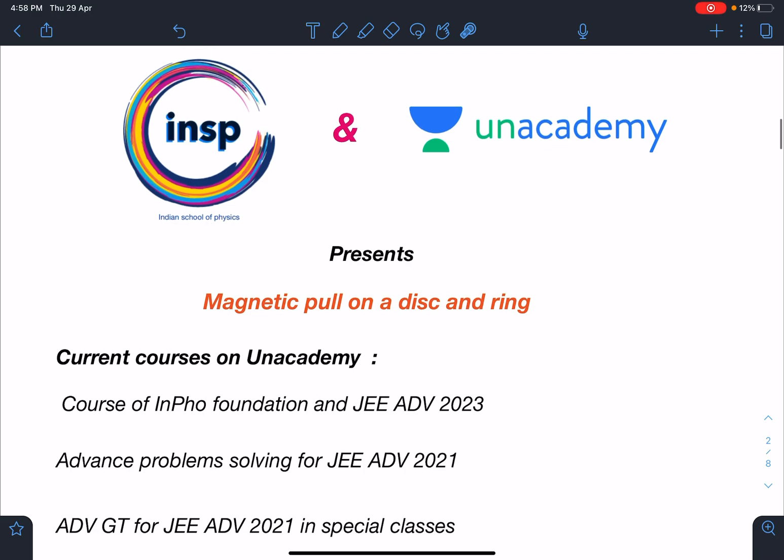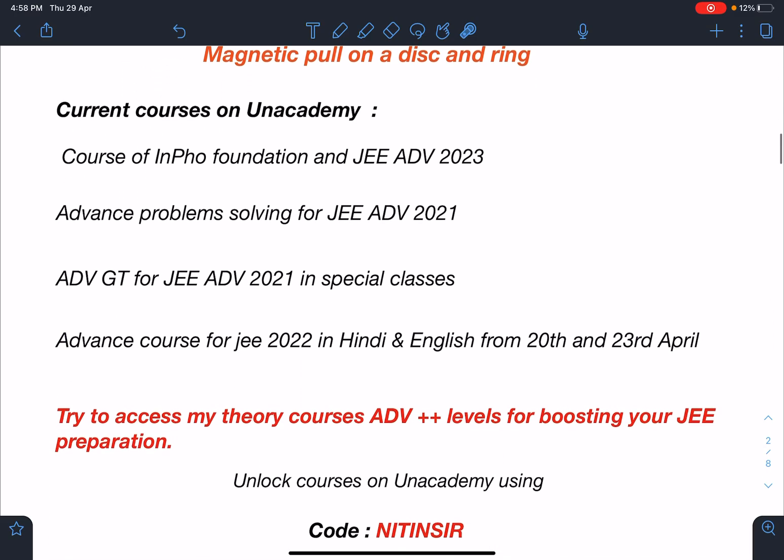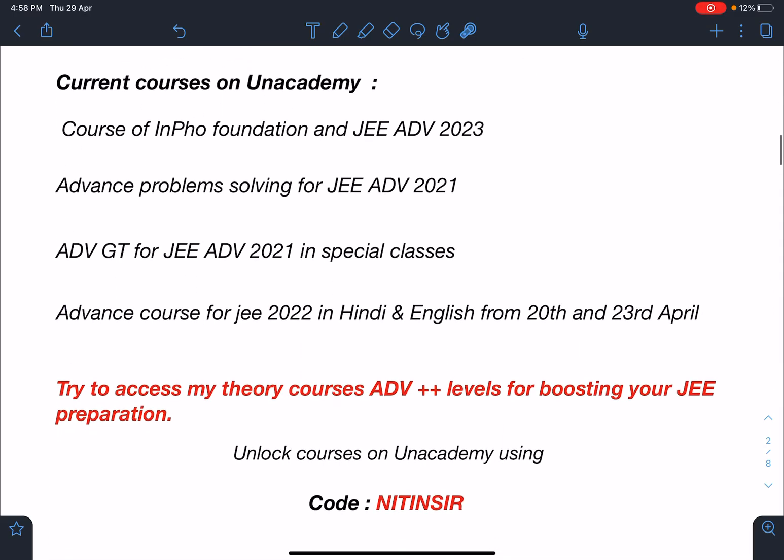This video is brought to you by Indian School of Physics and Unacademy together. The name of this problem is Magnetic Pull on a Disc and a Ring. My current courses on Unacademy are Course of InPho Foundation and for JEE Advanced 2023, and Advanced Problem Solving for JEE Advanced 2021 Part 1 has been completed and Part 2 is going to resume very soon.